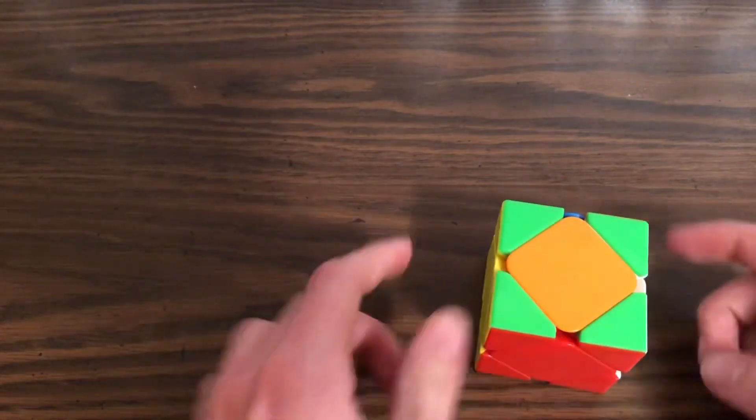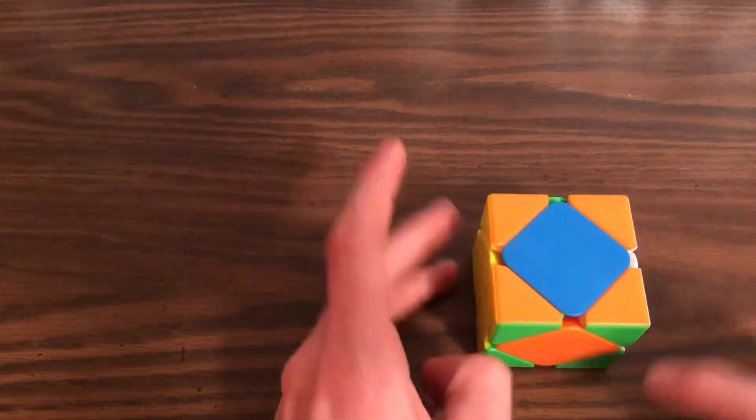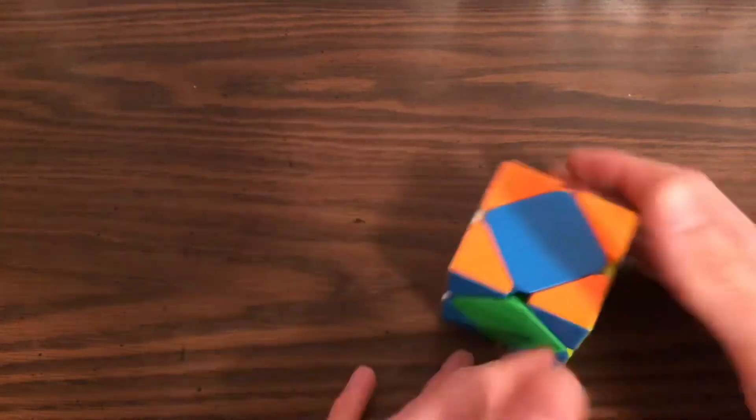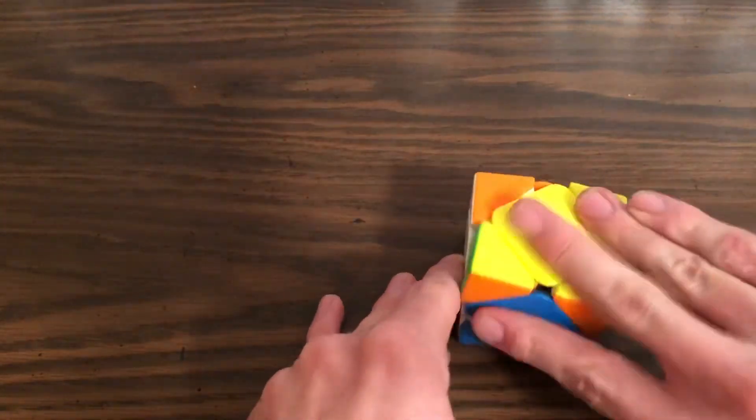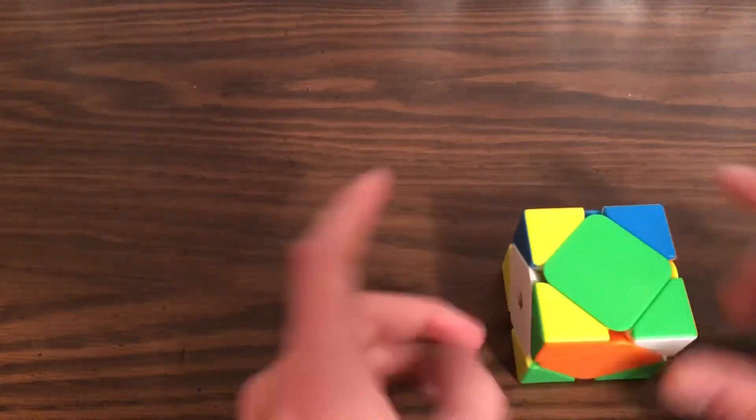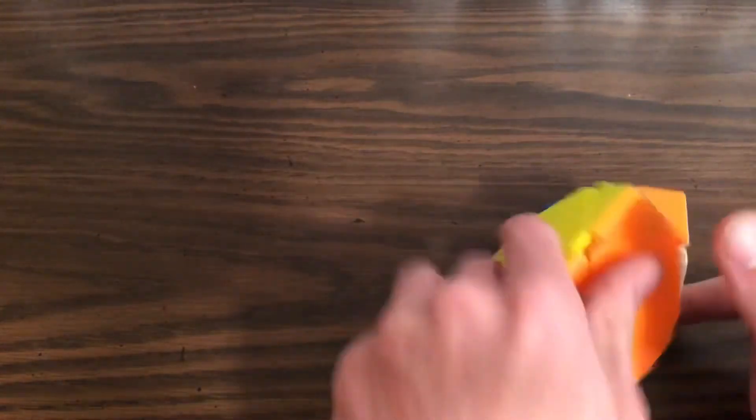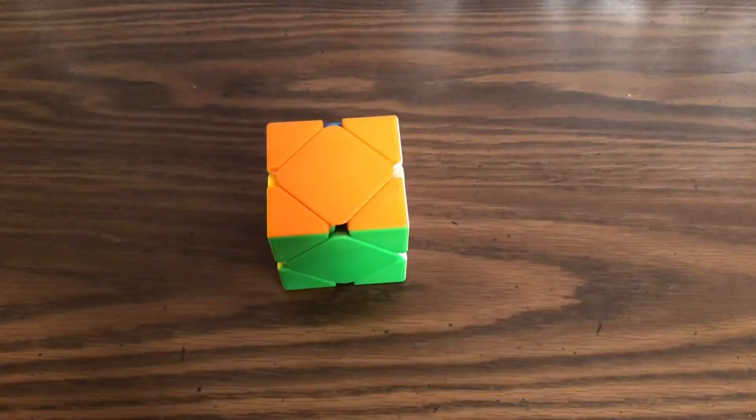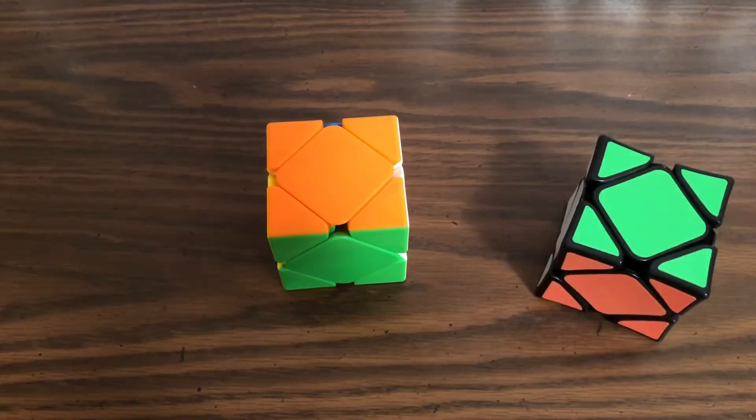And again, that gets you a three cycle. So we take our solved piece, put it on the bottom. Find our top sticker. Put it at the back. And down, down, up, up. 180 degrees. Down, down, up, up. And that is how you solve the cube.